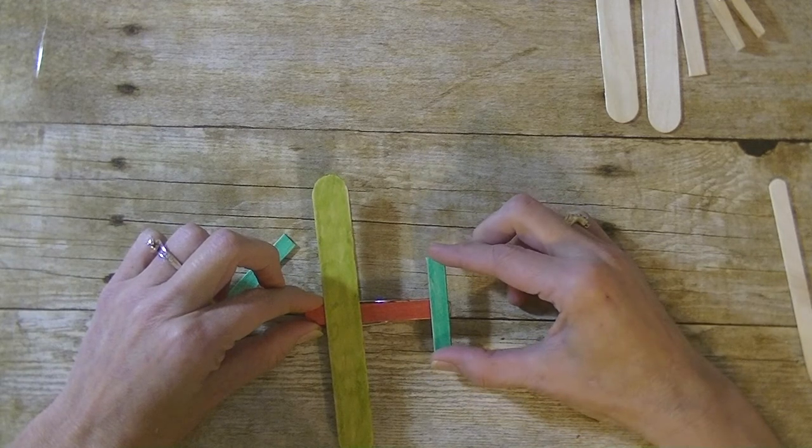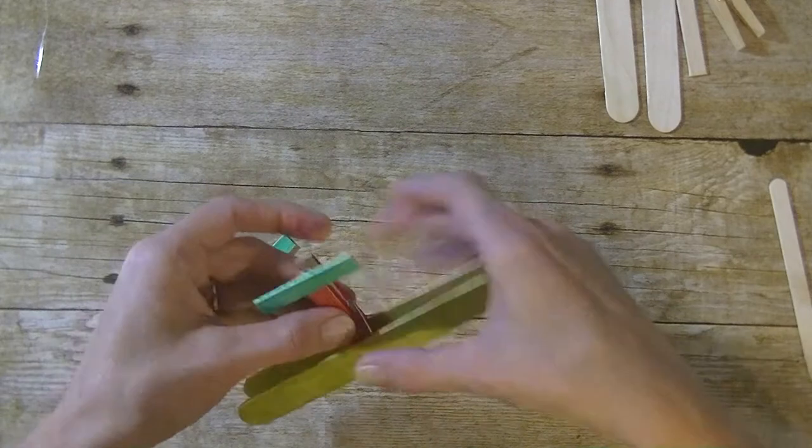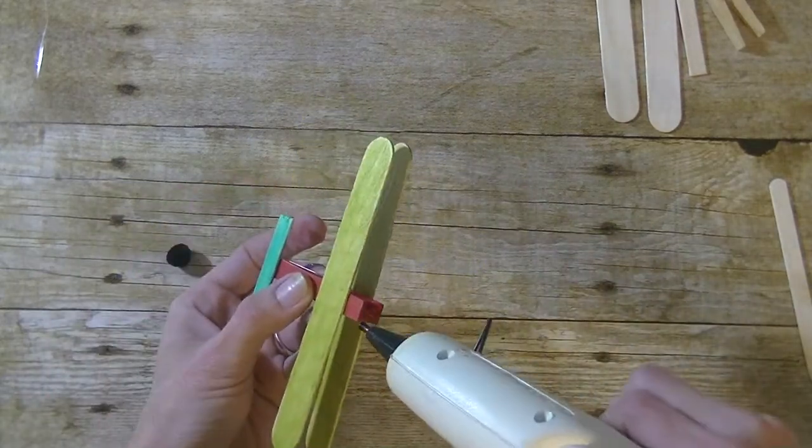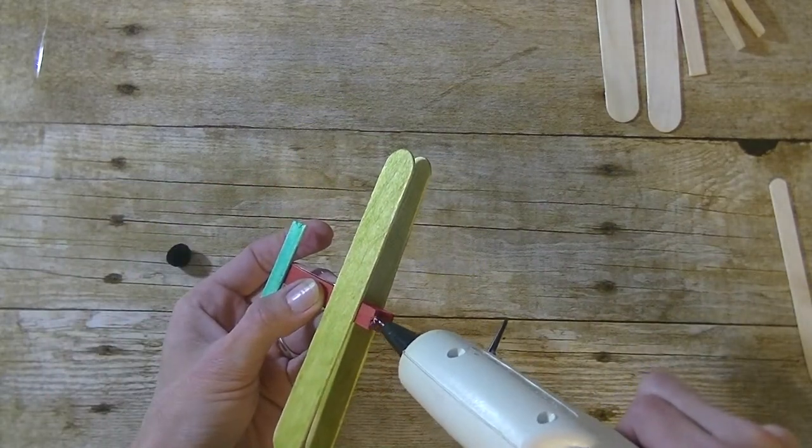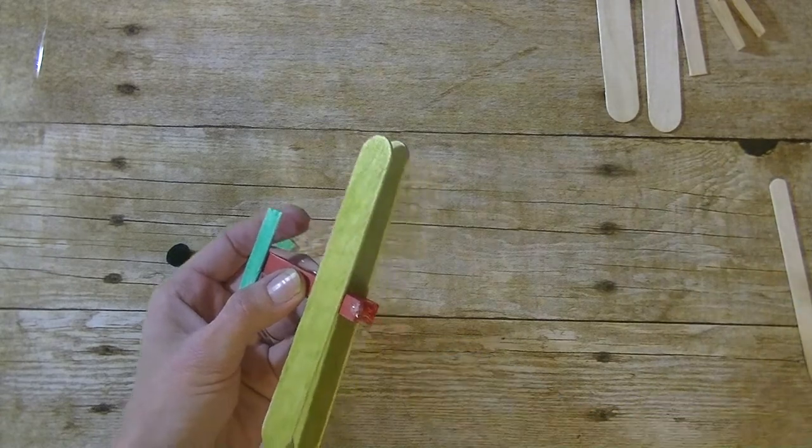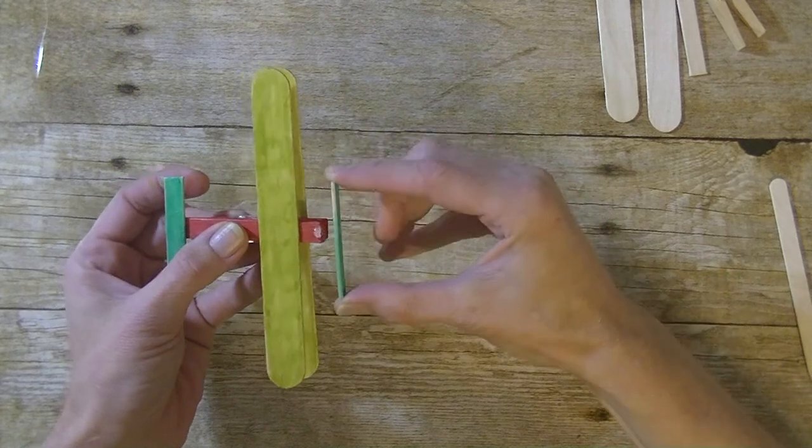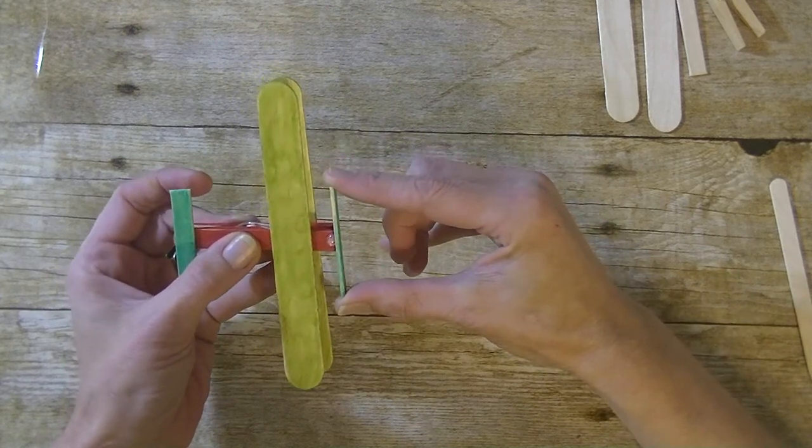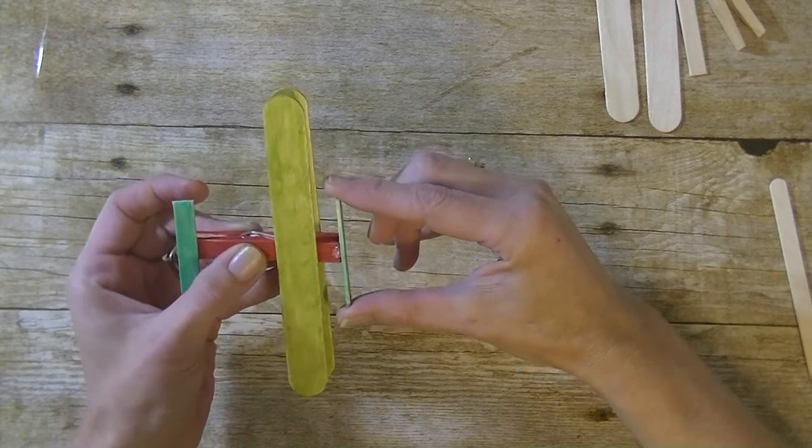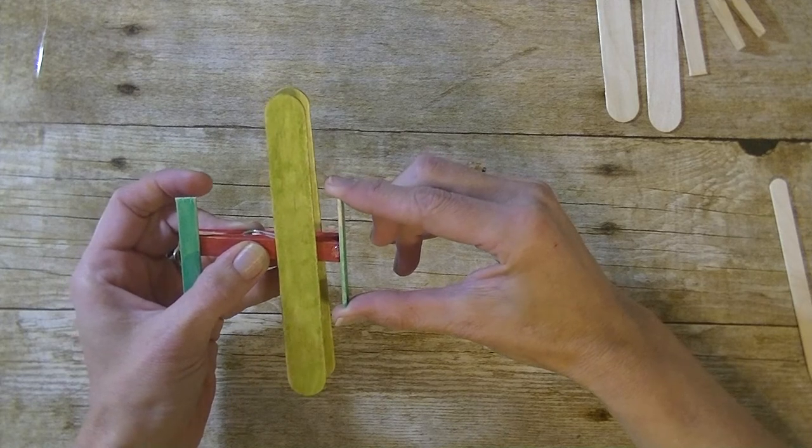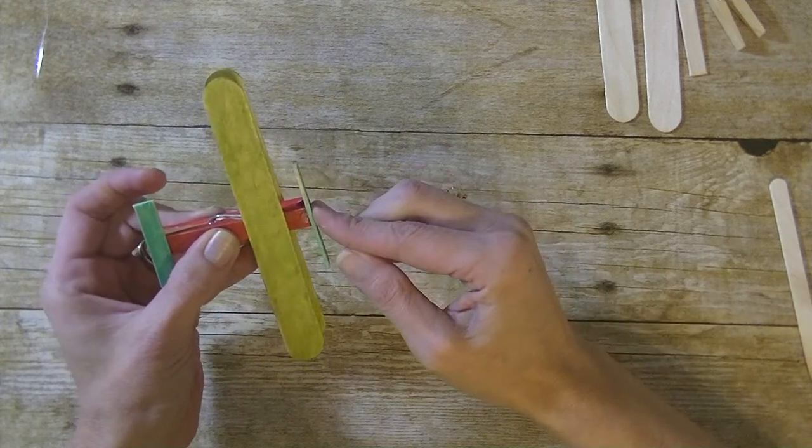Go ahead and flip it over toward the front, put some glue on there, and we're going to put this piece on the front of our airplane. Again, make sure that's straight - if not, it's okay. Let that set up for a minute.